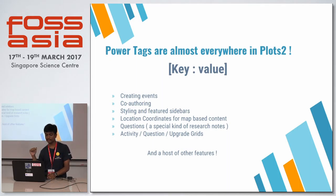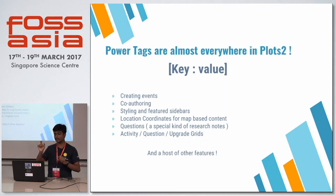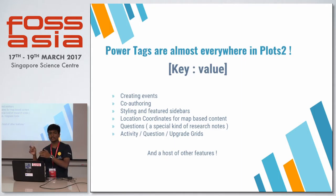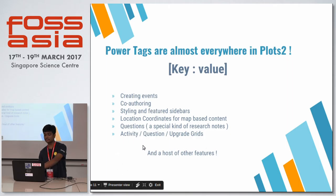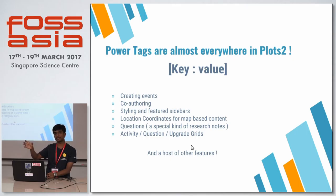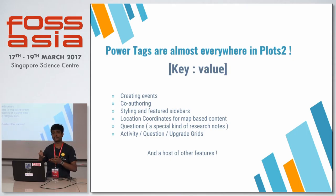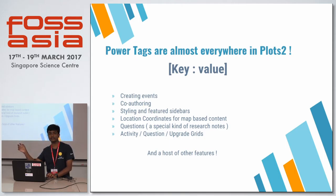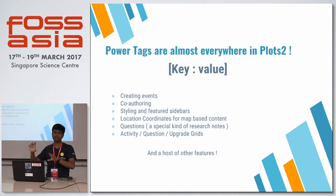There are also activity and upgrade grids — you just put a tag like 'activity:name' in your editor. This is a special kind of power tag called an inline power tag. Whenever you are writing content and want to show a table of related content, you can put an inline power tag like 'activity:name' and it lists all related content in tabular format right there.